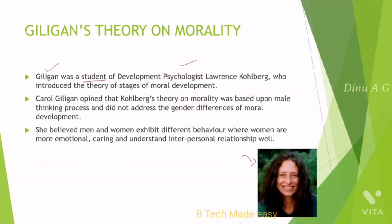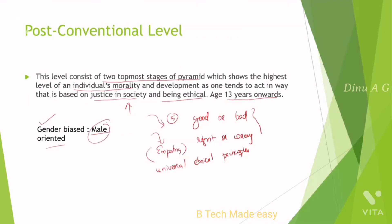Gilligan's theory of morality. Gilligan was a student of developmental psychologist Lawrence Kohlberg, who introduced the theory of stages of moral development. Gilligan's opinion was that Kohlberg's theory on morality was based upon male thinking process and did not address the gender difference in moral development. That is one of the limitations of Kohlberg's gender-based approach to moral development.